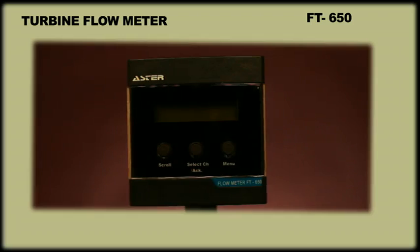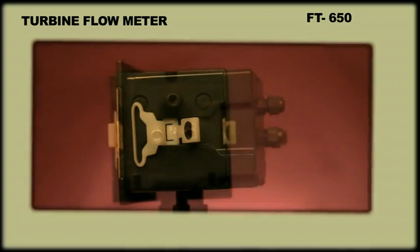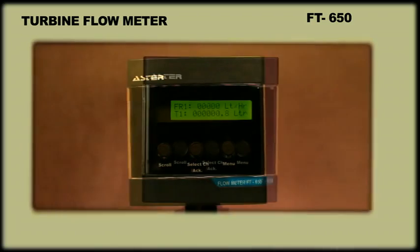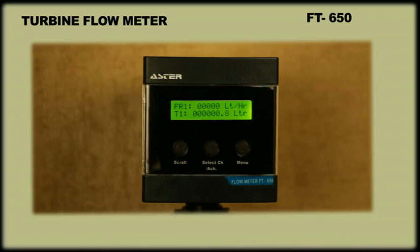FT-650. The model FT-650 is a turbine flow meter. It not only displays the flow rate but also shows the total quantity of water flowing in the pipe, thus acting as an indicator-cum-totalizer.